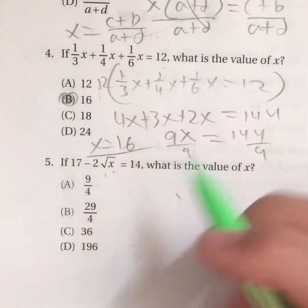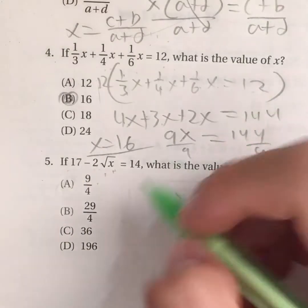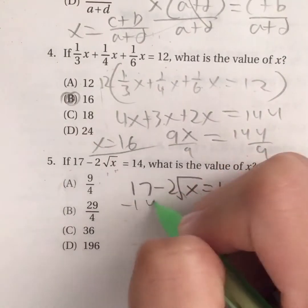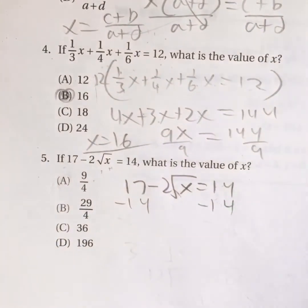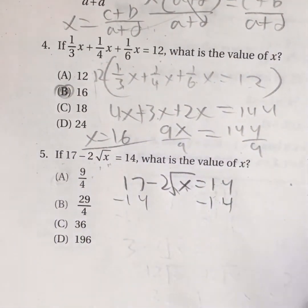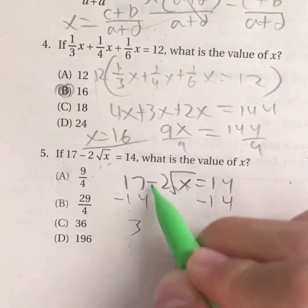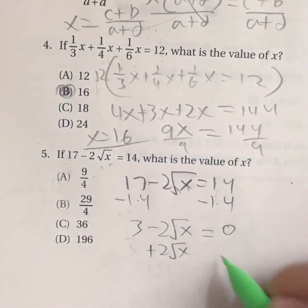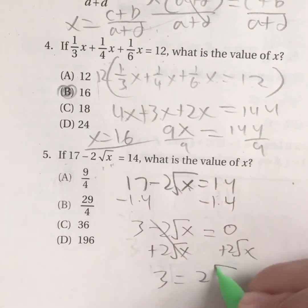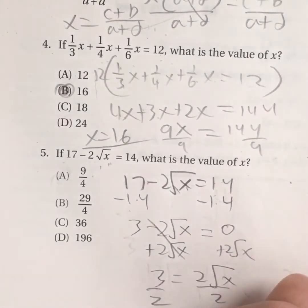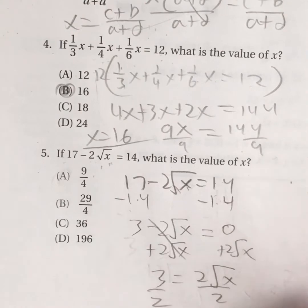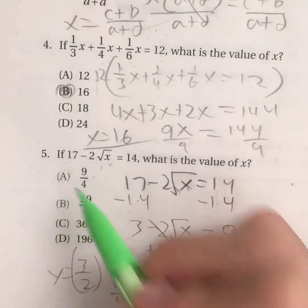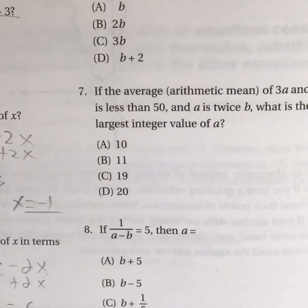Question five: if 17 minus 2 root x equals 14, what is the value of x? Subtract 14 on both sides: 3 minus 2 root x equals 0, so 3 equals 2 root x. Divide both sides by 2: three-halves equals root x. Square both sides: x equals (3/2) squared, which is 9 over 4. The answer is A.